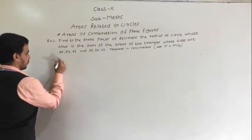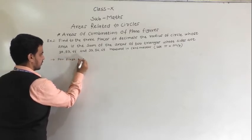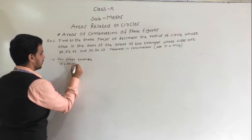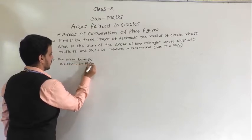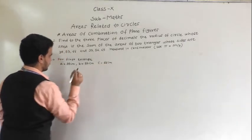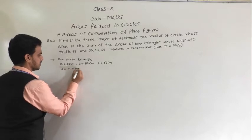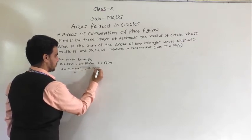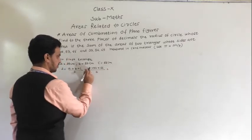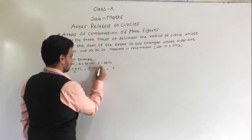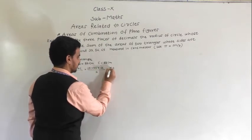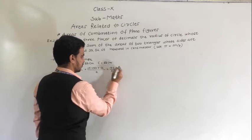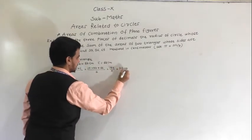For the first triangle: a = 35 cm, b = 53 cm, c = 66 cm. Semi-perimeter S = (a + b + c)/2 = (35 + 53 + 66)/2 = 154/2 = 77 cm.